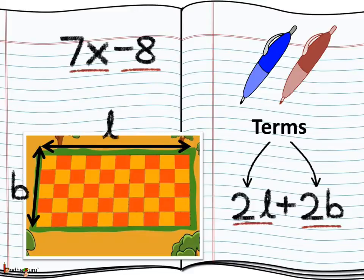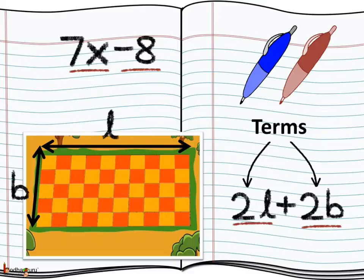An algebraic expression is made of terms. The several parts of an expression connected by addition or subtraction are called the terms. In other words, terms are connected by the plus or minus sign in an algebraic expression. For example, in 2l plus 2b, the terms are 2l and 2b. Remember, 2l — which is 2 multiplied by l — is a single term, not two terms, because l is connected to 2 by multiplication, not by addition or subtraction.